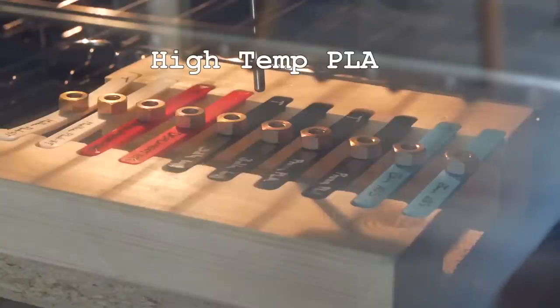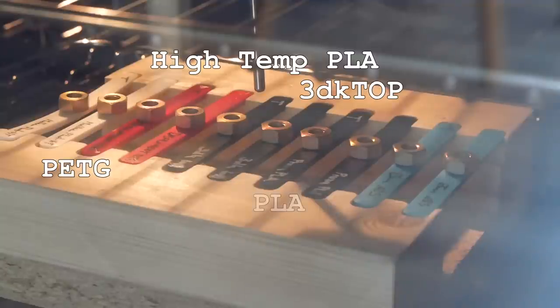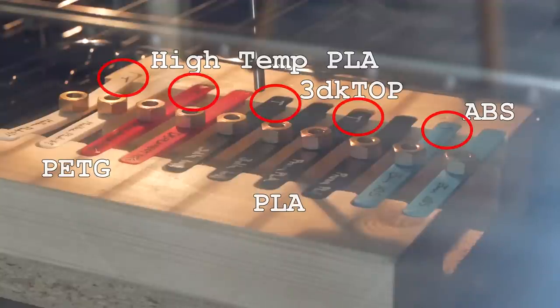The first test features a high temp PLA, PETG, another high temp filament, standard PLA and ABS. I always placed the as printed specimen next to the annealed one denoted with a T.